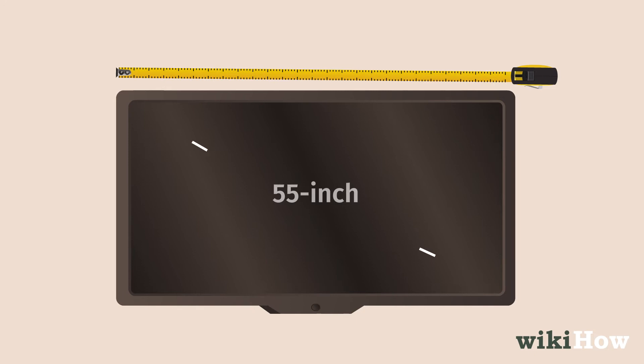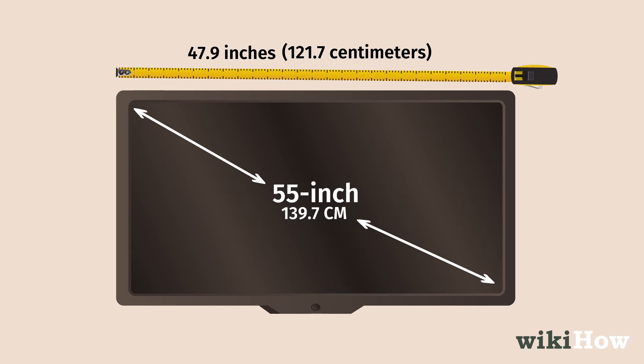For example, a TV with a 55 inch, 139.7 centimeter diagonal screen measurement will only be about 47.9 inches or 121.7 centimeters across.